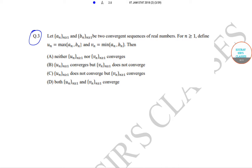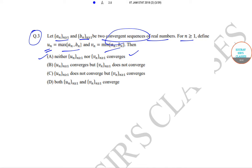In question number 3, it has been given that let a_n (where n ≥ 1) and b_n (where n ≥ 1) be two convergent sequences of real numbers. For n ≥ 1, u_n is defined as max(a_n, b_n) and v_n is defined as min(a_n, b_n). The options are: (a) neither u_n nor v_n converges, (b) u_n converges but v_n does not, (c) u_n does not converge but v_n converges, and (d) both u_n and v_n converge.